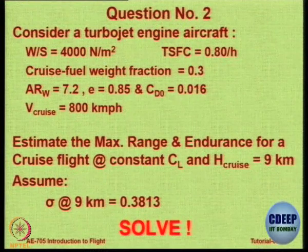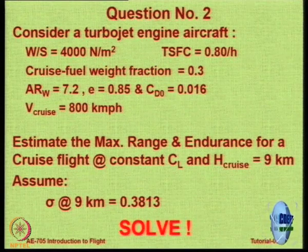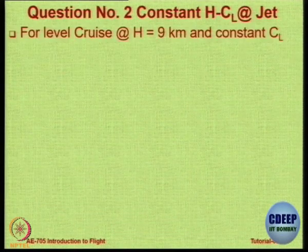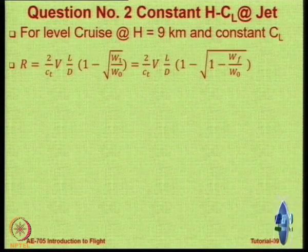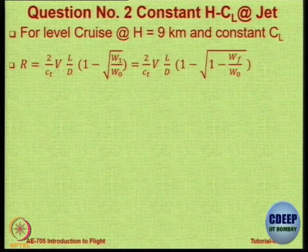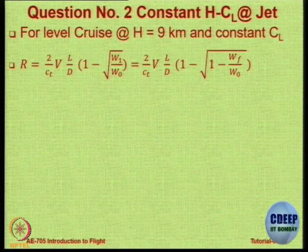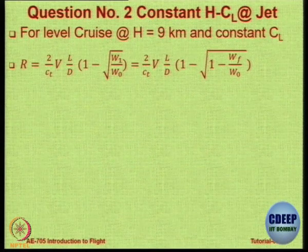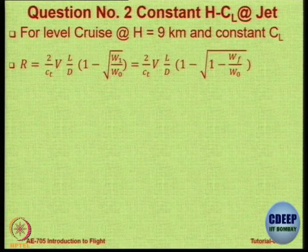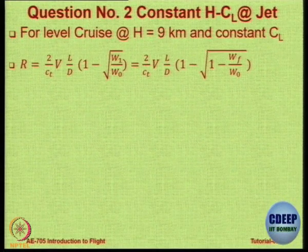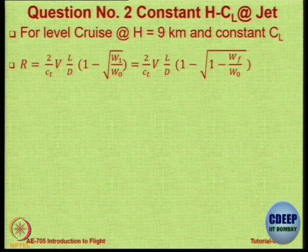For your convenience, the value of sigma is given at 9 kilometers, so the density at 9 km will be 0.3813 × 1.2256 kg/m³ assuming ISA conditions. Now, remember the equation for constant height, constant C_L. The range is: R = (2/SFC) × (L/D) × [1 − √(W1/W0)], where W0 is the maximum takeoff weight equal to W1 plus WF, and since the cruise fuel fraction WF/W0 = 0.3, you can rearrange in terms of the known information.